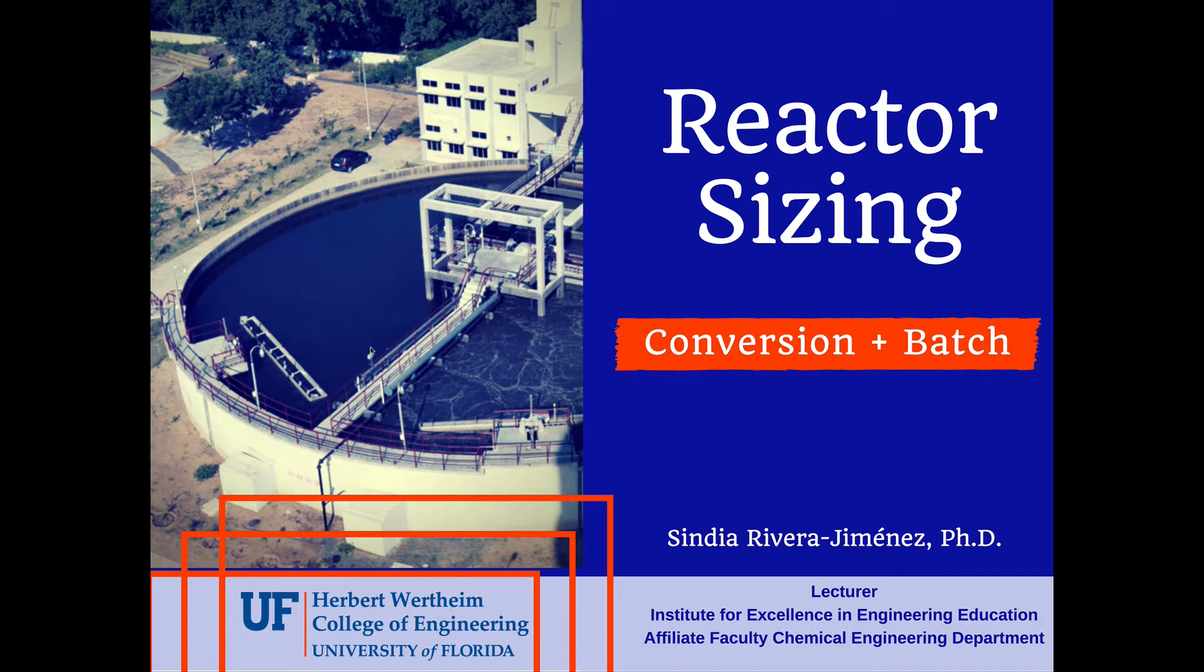Then we're going to see examples comparing CSTRs and PFRs, and we're going to be deciding the best arrangement for reactors in series to maximize conversion. We're going to be calculating the overall conversion and reactor volumes for reactors arranged in series.